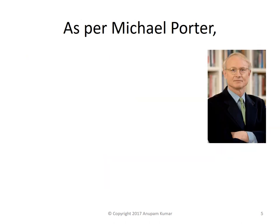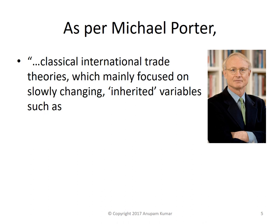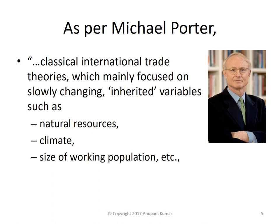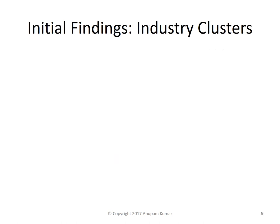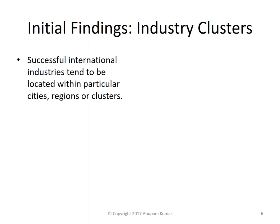As per Michael Porter, the classical international trade theories, which mainly focused on slowly changing inherited variables such as natural resources, climate, and size of working population, could only partially explain why nations gain competitive advantage in a given industry. As per the study, the initial findings found that successful industries tend to be located within areas in particular cities, regions, or clusters.